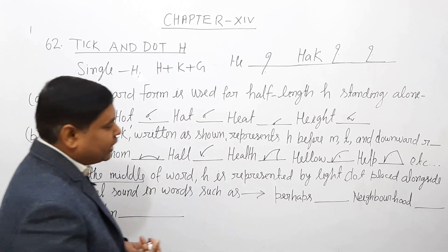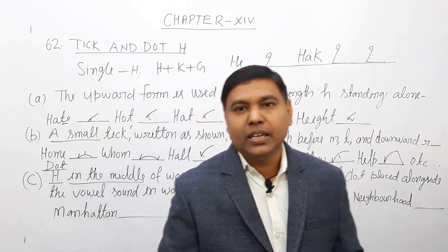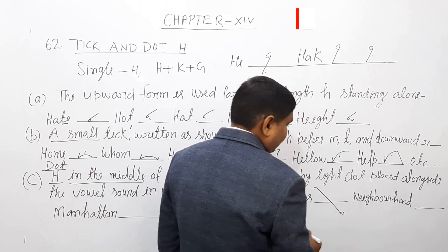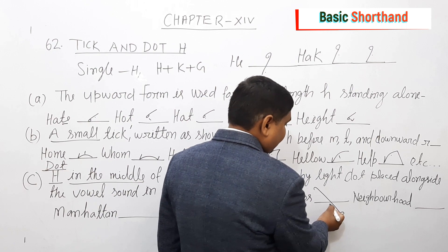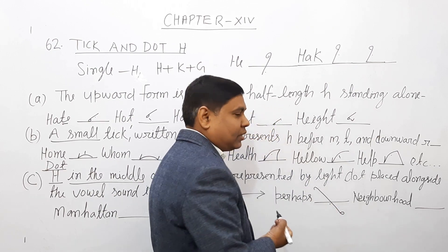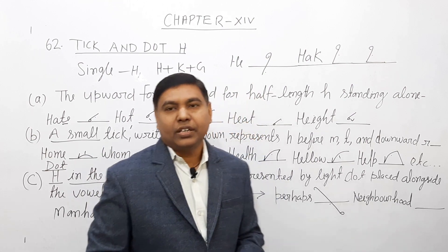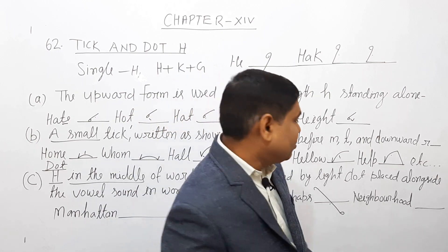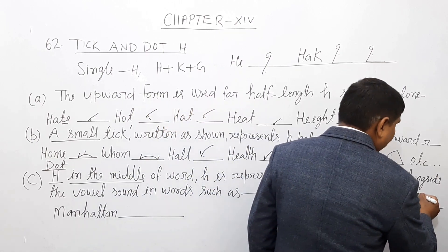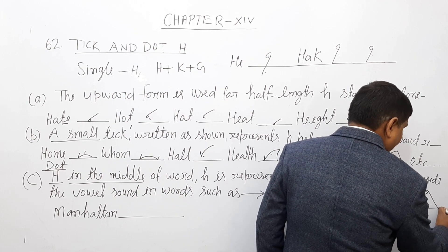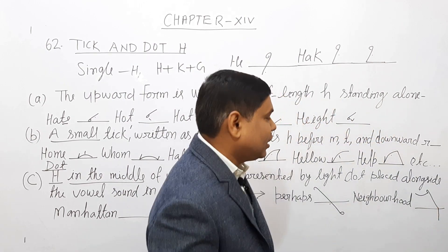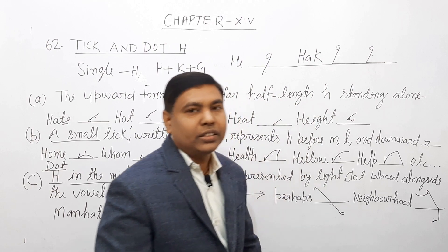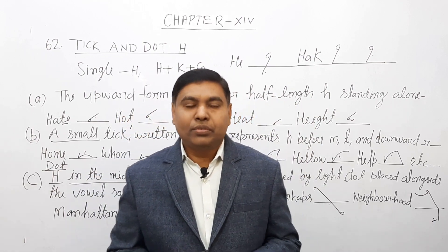पहला word है 'Perhaps'। अब Perhaps में क्या करना है — PR का hook है और ऐसे है, अब A का sound है, यहाँ एक dot लगाएंगे, just यहाँ लगा देंगे, ताकि यह हमारा H का indicate कर रहा है। Next word है 'Neverhood' — इसमें N बनाएंगे और D बनाएंगे, अब U का sound यहाँ पे आ रहा है, तो इसके just ऊपर H का dot लगा देंगे — यह आपको ध्यान देना है।